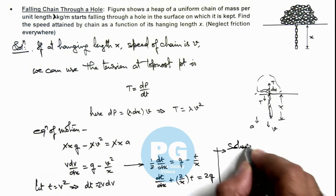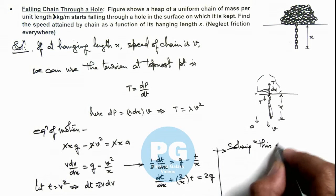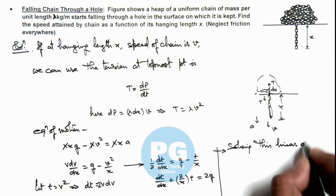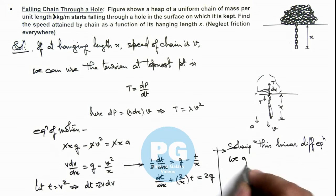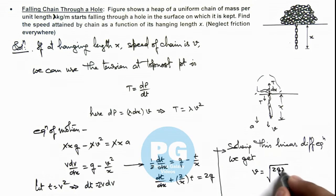Solving this linear differential equation, we get the speed of the chain as root of 2gx/3, which will be the final result of this problem.